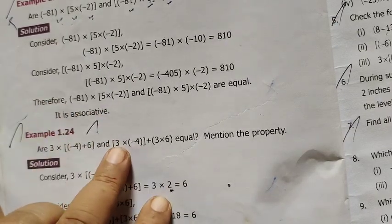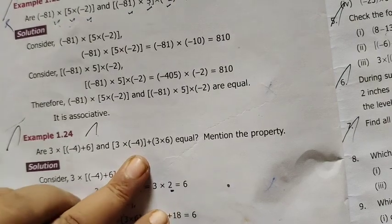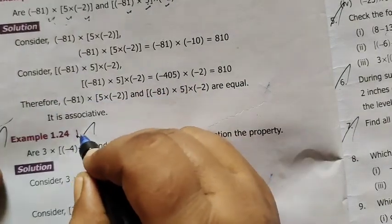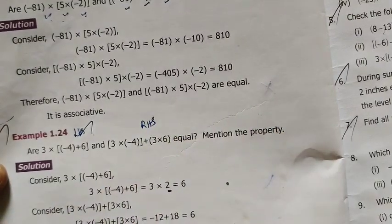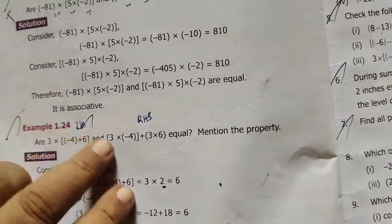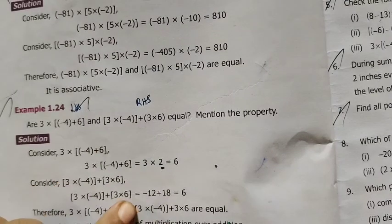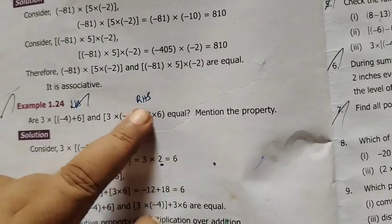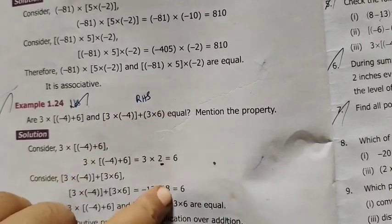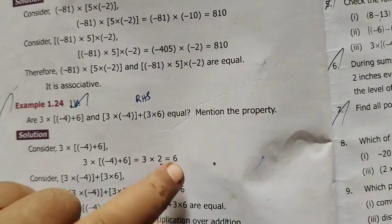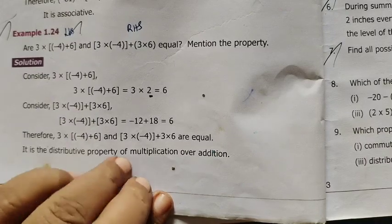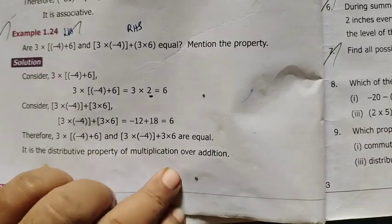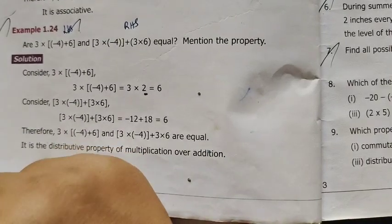This is LHS and this one is right hand side. Left hand side, right hand side. 3 into minus 4, minus 12. 3 into 6, 18. 2 is 6. So this is 6. This is 6. So Distributive Property OK. This is correct. Thank you.